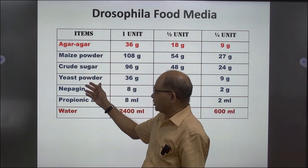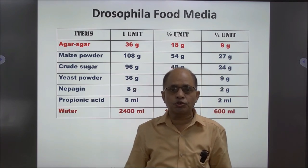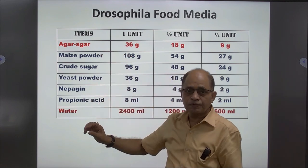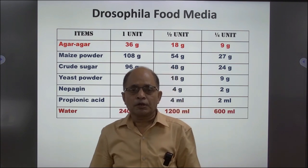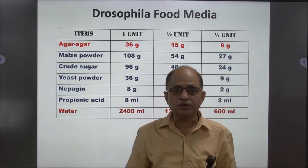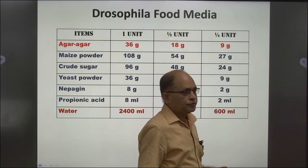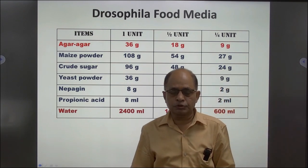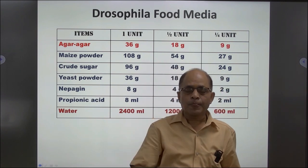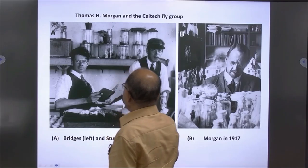If using half or one-fourth unit, we prepare 1200 ml and 600 ml accordingly. First we prepare the agar agar; meanwhile we weigh maize powder, crude sugar, yeast, and nipagin. Propionic acid is a liquid — if added while boiling, its properties would be destroyed — so after preparation of agar agar we mix these three dry parts with continuous stirring. Once prepared, we check for gelation, remove from gas burners, wait 5 to 10 minutes, mix in propionic acid properly, then pour into bottles, vials, or petri dishes.